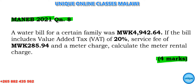A water bill for a certain family was 4,942 kwacha 64 tambala. This bill includes a VAT (value added tax) of 20% and a service fee of 285 kwacha 94 tambala, plus a meter charge. You have been asked to calculate the meter length and charge.